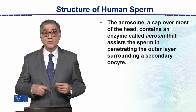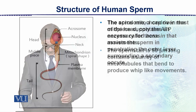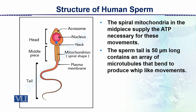The acrosome is a cap over most of the head that contains an enzyme called acrosin, which assists the sperm in penetrating the outer layer surrounding the secondary oocyte. In this diagram, one can see the detail of the sperm — the cap-like acrosome, the haploid nucleus, and the tail.